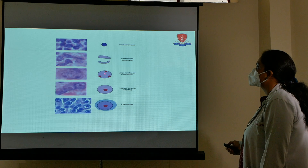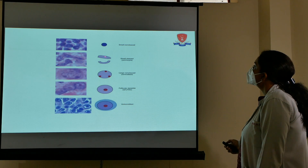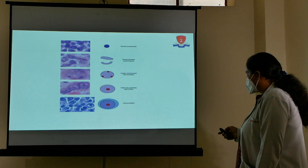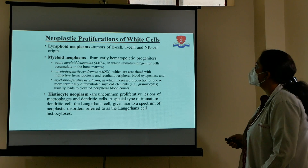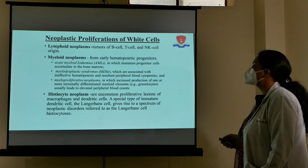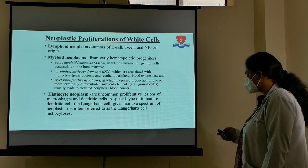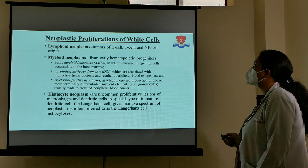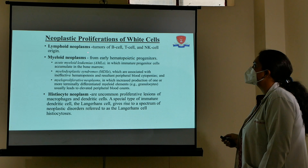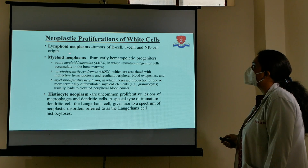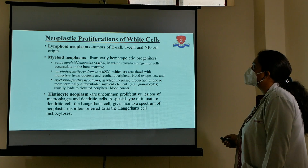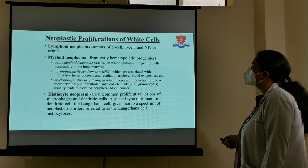Centrocytes then develop into mature lymphocytes, which are small cells. This brings us to neoplastic proliferation of white cells. White cells are divided into lymphoid cells, myeloid cells, and histiocytic cells. Lymphoid cells — B cells, T cells, and NK cells — develop into lymphomas and lymphoid neoplasms. Myeloid cells, which are granulocytes, develop into acute myeloid leukemias, myelodysplastic syndromes, and myeloproliferative neoplasms.